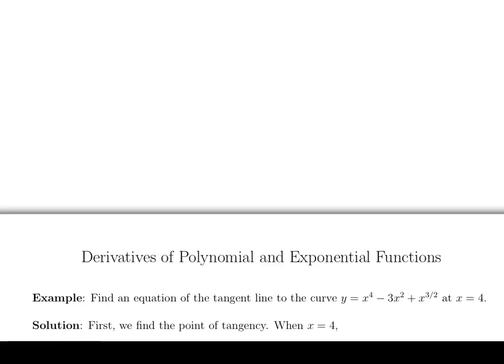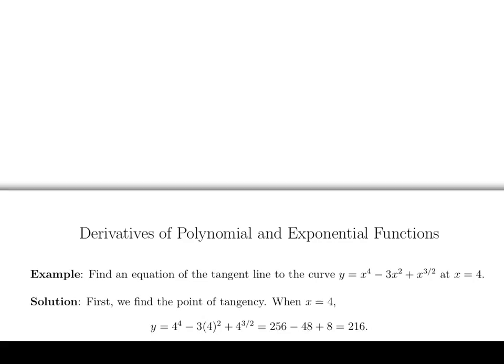So let's find the point of tangency. That is what point on the curve. We'll basically plug in x equals 4 and we'll get this expression: 4 to the fourth power minus 3 times 4 squared plus 4 to the 3 halves. And that all works out to 216 if you work that out. Might be worth knowing how to do this sort of thing by hand. Might want to review that if you're not sure how to do those kind of fractional powers.